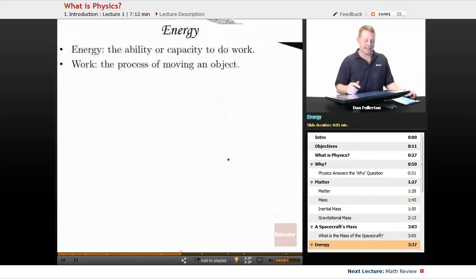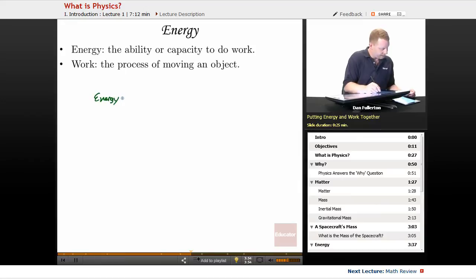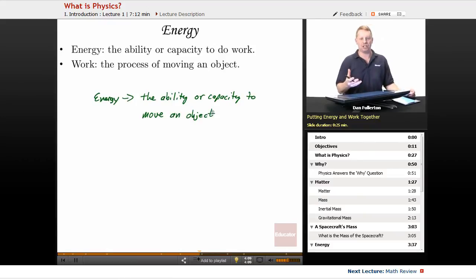Let's take a look now at energy. Energy is the ability or capacity to do work. Well, that's not a very helpful definition unless we talk about work. Work is the process of moving an object if we wanted to be very informal about it. So then if we put those together, we could say that energy is the ability or capacity to move an object.